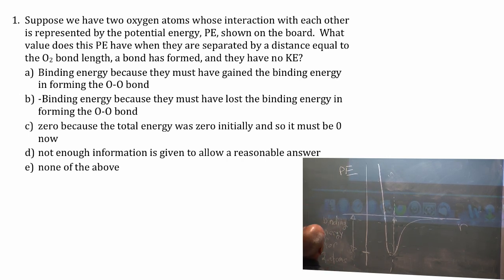What value does this potential energy have when they are separated by a distance equal to the bond length? And you formed a bond and there is no kinetic energy. So they're at a distance equal to the bond length. You have formed a bond and they have no kinetic energy. What is the value of the potential energy right then? That's my question for you. Is it the binding energy? Is it the negative of the binding energy? Is it zero? Did I not tell you enough information or none of the above?